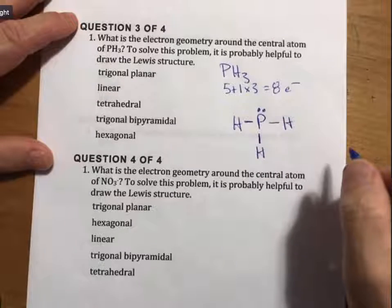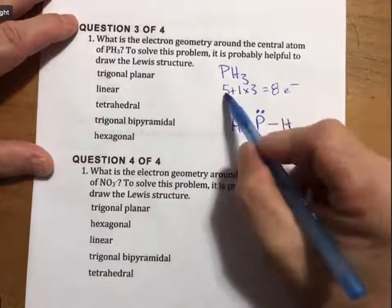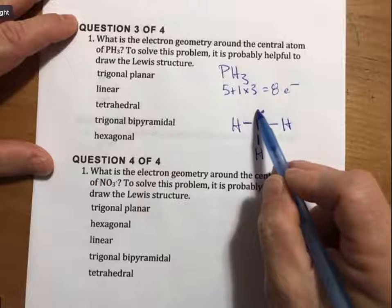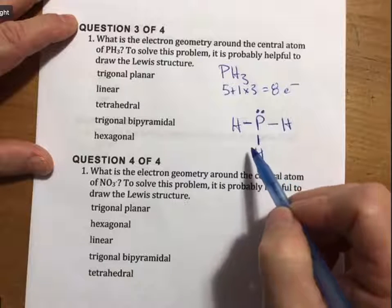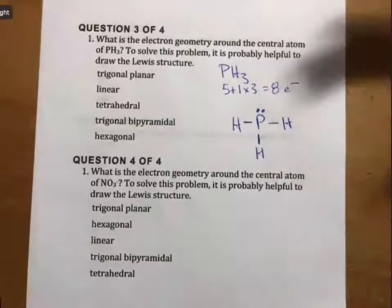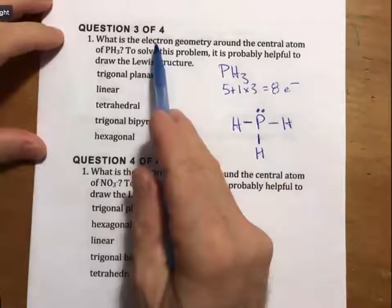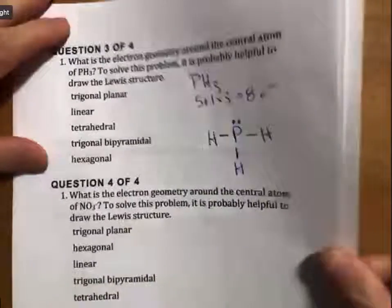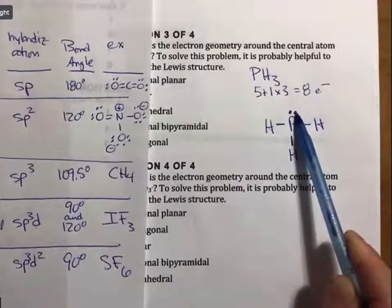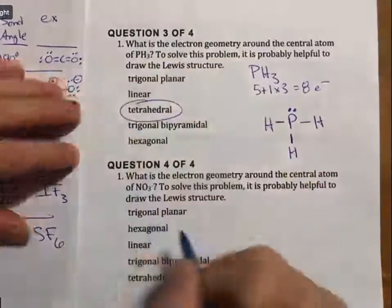Were we to do a formal charge analysis, we don't usually do it for hydrogen, but we would see all the hydrogens have zero formal charges. Phosphorus, since it's in group 5 or 15, has five valence electrons minus the three bonds and two unshared electrons. 5 minus 5 is zero. This has no formal charge on any of the atoms. Now the process is always the same: draw the best Lewis structure, then answer the question. If you've got your table or it memorized, we count up one, two, three, four electron groups. Four electron groups is tetrahedral. That's the answer.